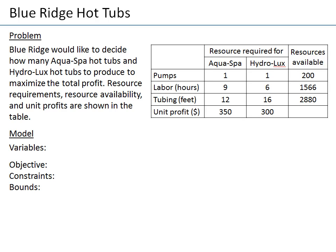There are resource restrictions on the production given in the table. The three limited resources are pumps — we need one pump for each Aquaspa and one for each Hydrolux, with only 200 pumps available. Each Aquaspa requires nine hours of labor and each Hydrolux requires six hours, with 1566 labor hours available. For tubing, we need 12 feet per Aquaspa and 16 feet per Hydrolux, with 2880 feet available. The unit profit is $350 per Aquaspa and $300 per Hydrolux.